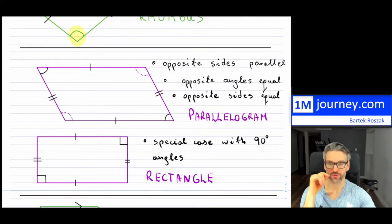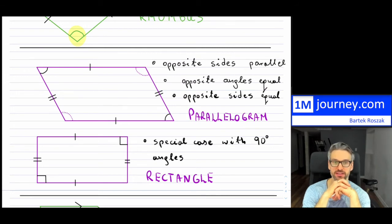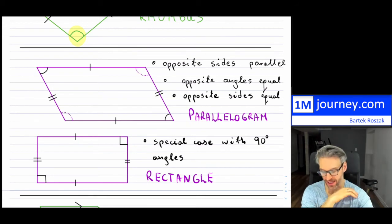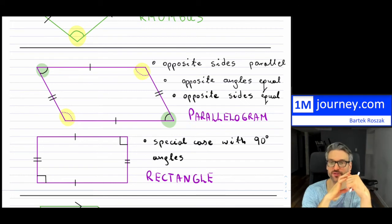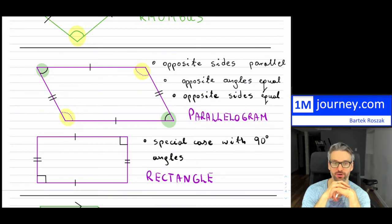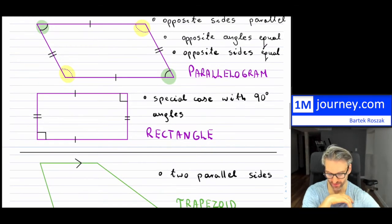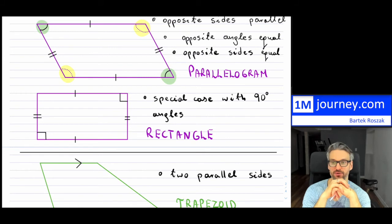Moving on, a parallelogram has opposite sides that are parallel and equal to each other, and the opposite angles are also identical to each other, just like in a rhombus. The difference from a rhombus is that the sides are not all identical. The special case of a parallelogram is a rectangle, where all angles are 90 degrees and the opposite sides are equal.